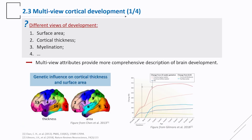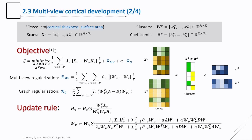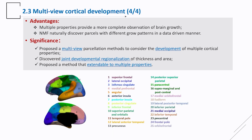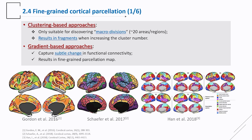After studying cortical thickness, we wanted to see whether increasing the number of features could yield more regions. We developed multi-view non-negative matrix factorization to capture co-developing patterns across multiple attributes. Using cortical surface area and cortical thickness together, we found 25 regions. However, increasing the number of clusters or features did not yield better parcellations; keeping cluster numbers around 20 was necessary, otherwise the result would fragment. Due to this limitation, we turned to a gradient-based approach.